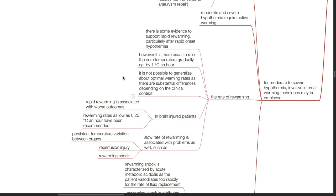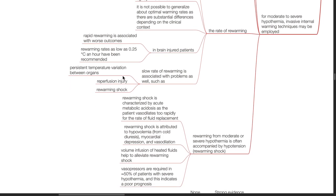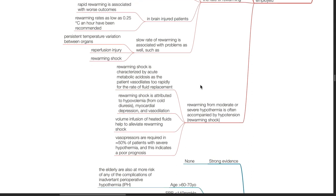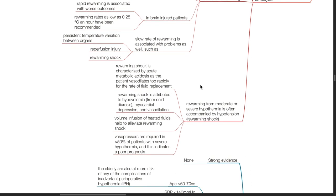A slow rate of re-warming is associated with problems such as persistent temperature variation between organs, reperfusion injury, and re-warming shock. Re-warming from moderate or severe hypothermia is often accompanied by hypotension, a phenomenon known as re-warming shock. This is characterized by acute metabolic acidosis as the patient vasodilates too rapidly for the rate of fluid replacement. Re-warming shock is attributed to hypovolemia from cold diuresis, myocardial depression, and vasodilation. Volume infusion of heated fluids helps to alleviate re-warming shock. Vasopressors are required in about 50% of patients with severe hypothermia, and their use indicates a poor prognosis.